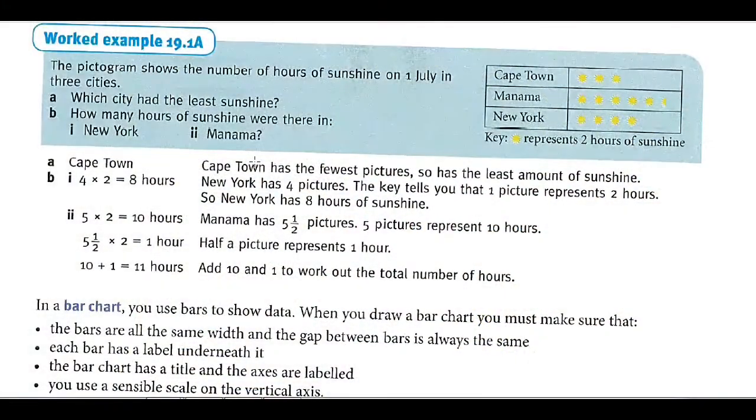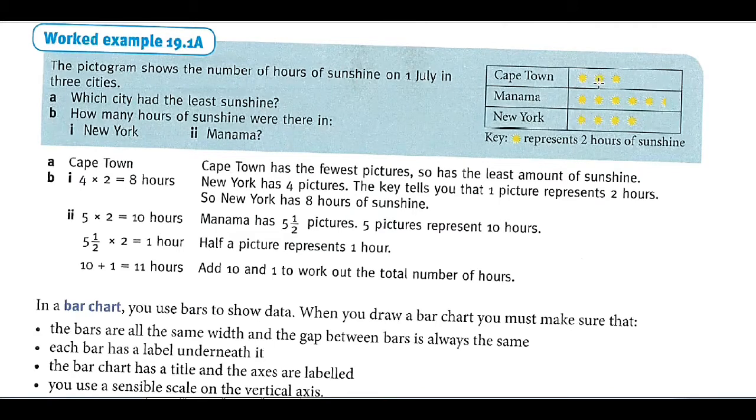Question number one, example one. The pictogram is like this where they draw pictures. One picture represents two hours of sunlight. Cape Town has how many? Six hours. We're finding like this: two, four, six, eight, ten, eleven hours. Which city has the least sunshine? The least is Cape Town because they have only six hours of sunshine.